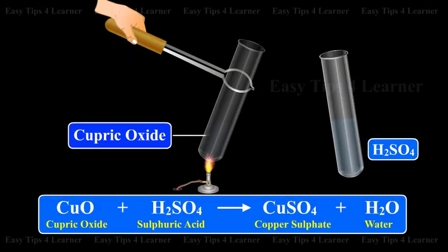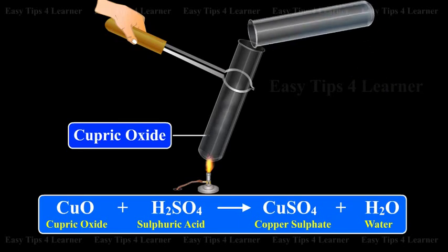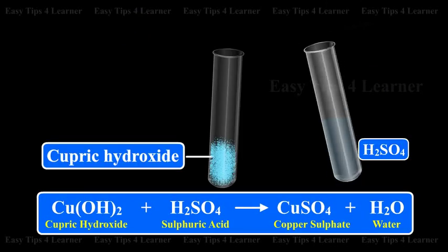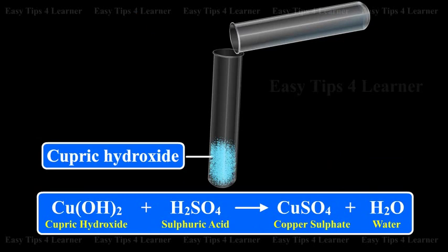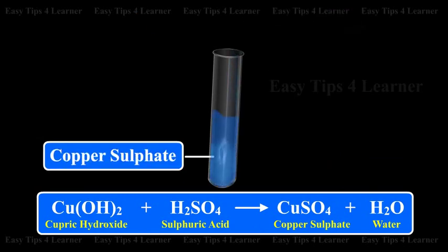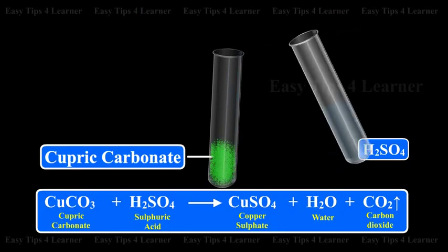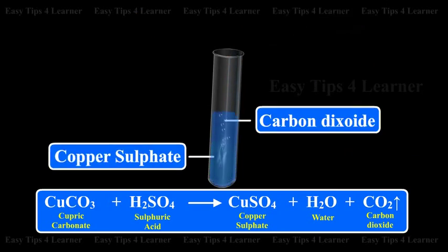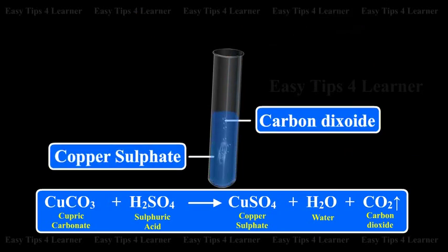Cupric oxide plus sulfuric acid gives copper sulfate plus water. Cupric hydroxide plus sulfuric acid gives copper sulfate plus water. Cupric carbonate plus sulfuric acid gives copper sulfate plus water plus carbon dioxide.